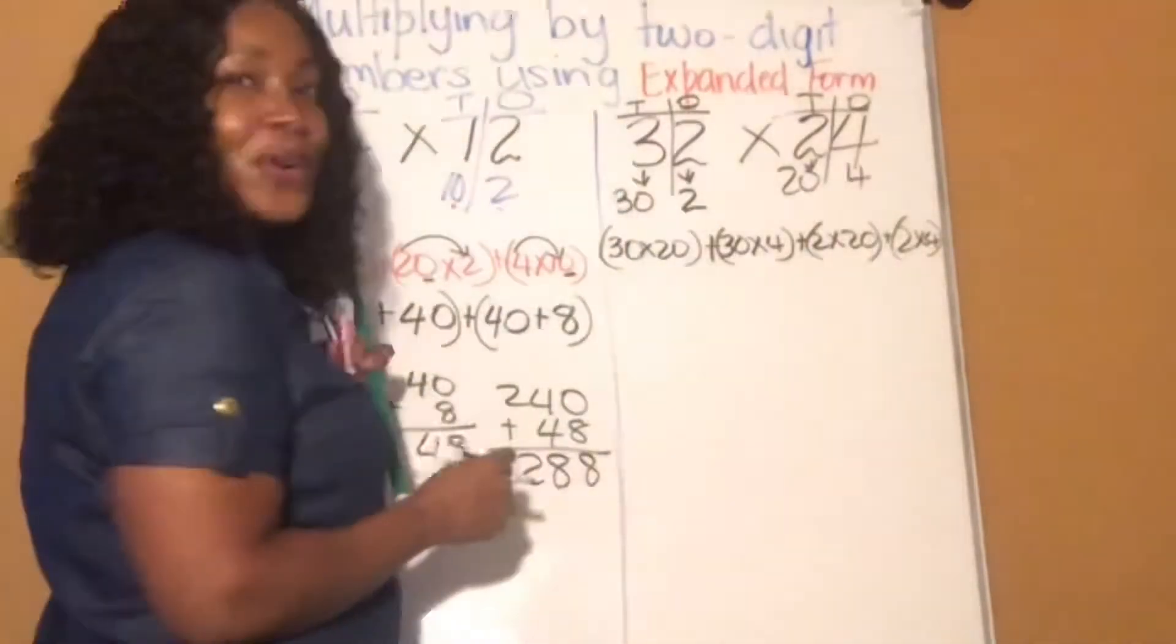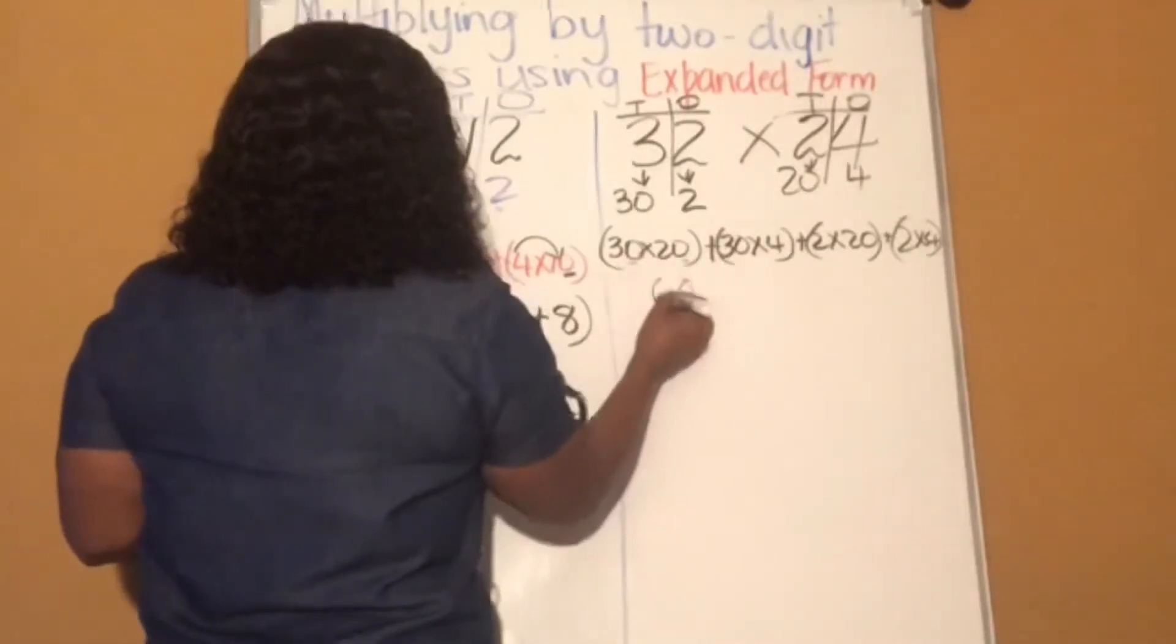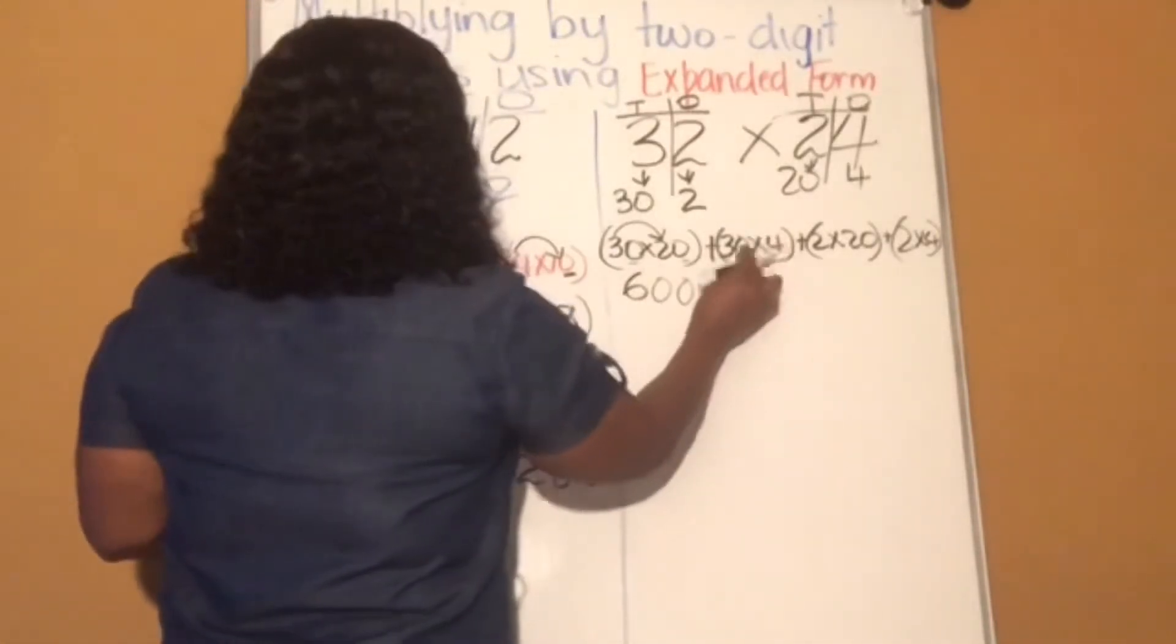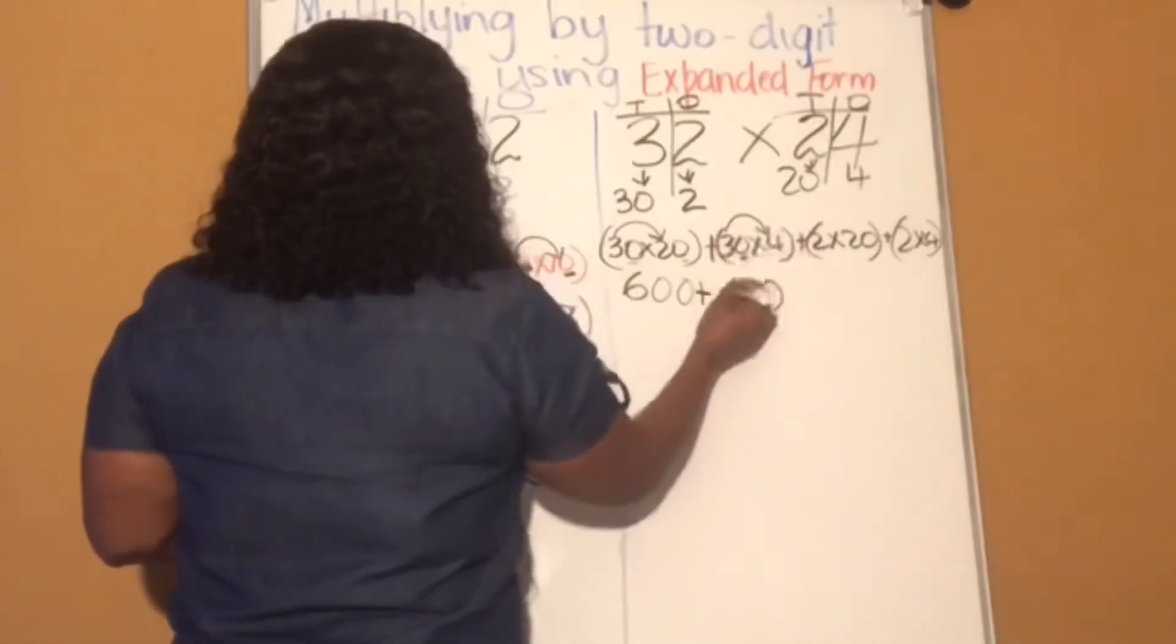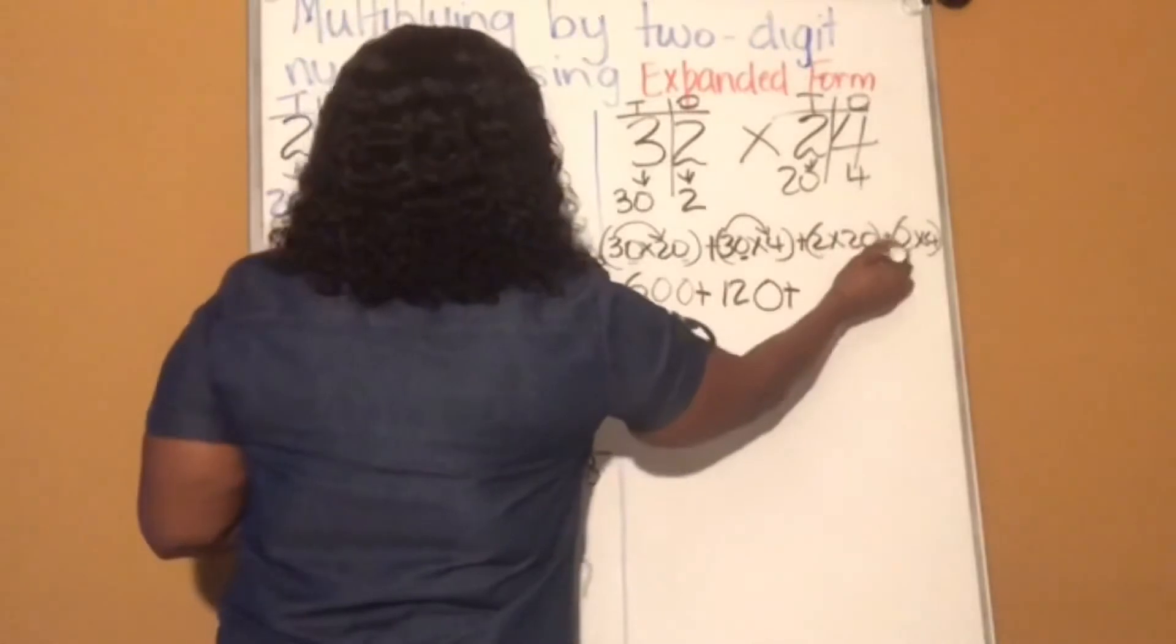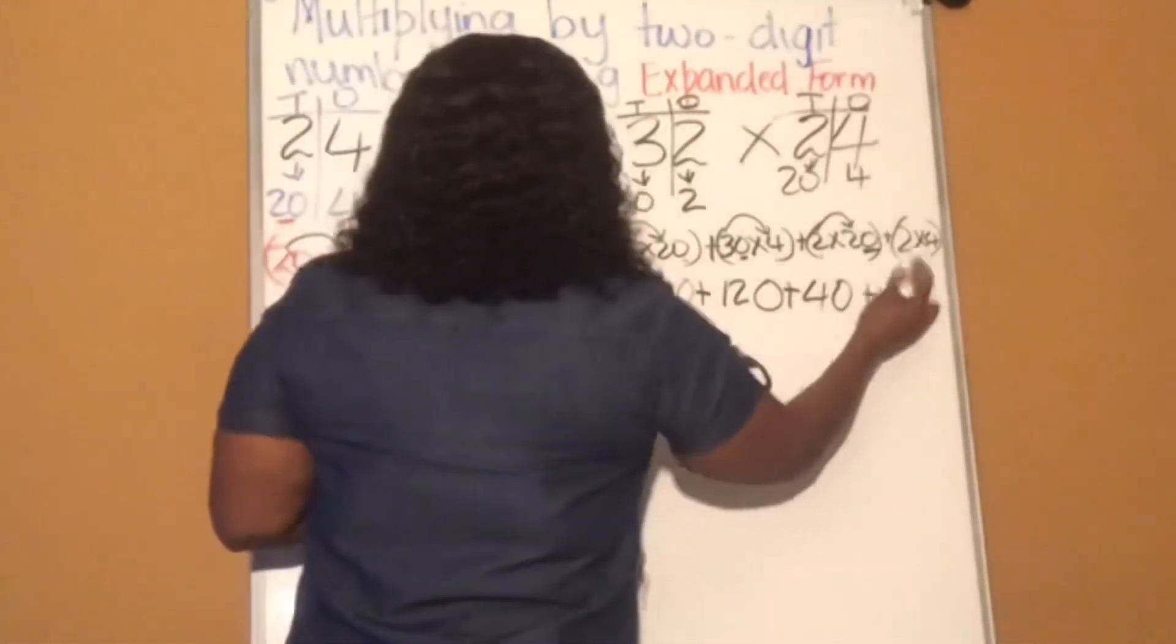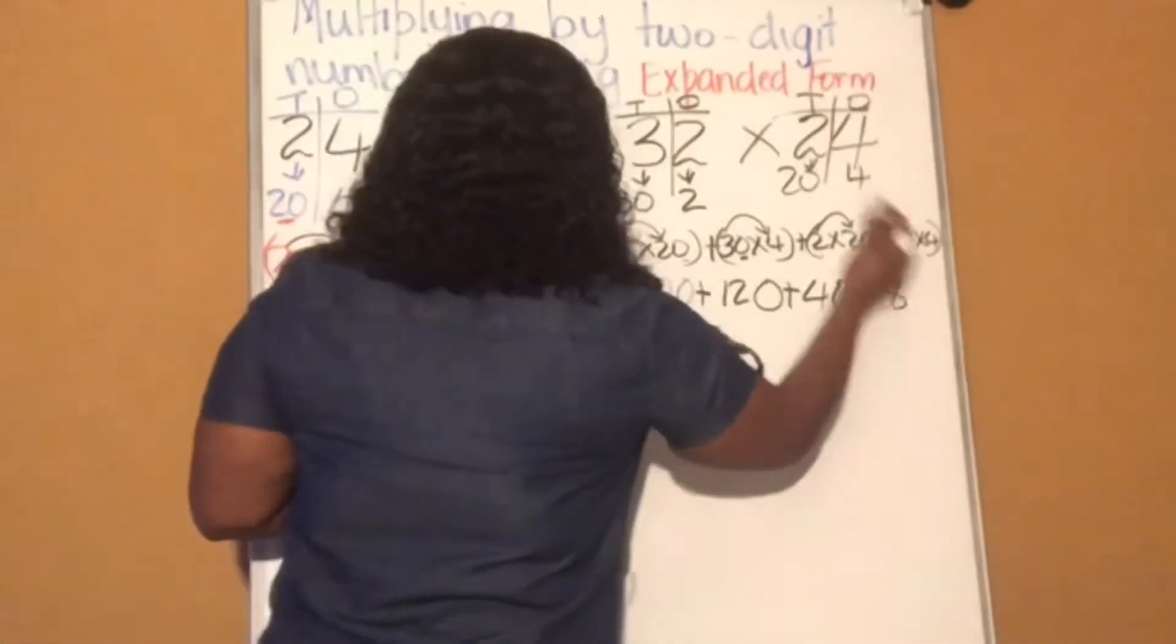Ready to work them out. 30 times 20, that's 2 zeros, so we write them down. And then 3 times 2, that's 6. 30 times 4, that's 1 zero, so we write it down. And 3 times 4, that's 12. Plus 20 times 2, that's 1 zero, and 2 times 2, that's 4. Plus 2 times 4, no zero, so we get 8.